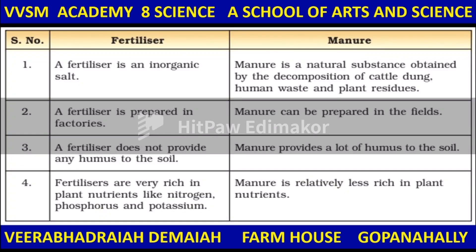The difference between fertilizer and manure: a fertilizer is an inorganic salt, while manure is a natural substance obtained by the decomposition of cattle dung, human waste, and plant residues — it is an organic fertilizer. Fertilizer is artificial or chemical, prepared in factories, while manure is prepared in the fields. Fertilizer does not provide any humus to the soil, but manure provides a lot of humus which helps plant growth. Fertilizers are very rich in plant nutrients like nitrogen, phosphorus and potassium, while manure is relatively less rich in plant nutrients.